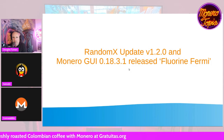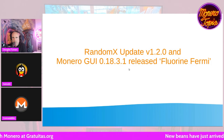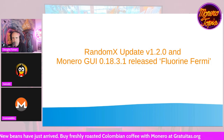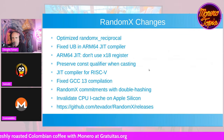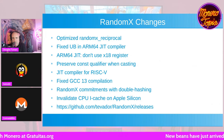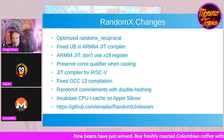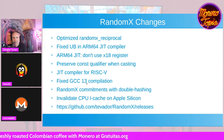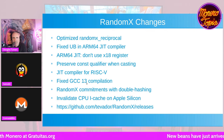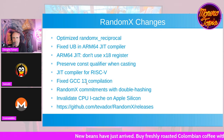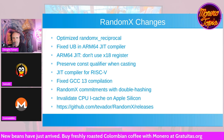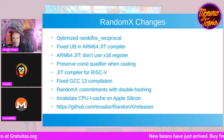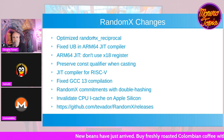So there's RandomX updates to v1.2. And the GUI, code name Fluorine for me, is version 0.18.3.1. The GCC13 compilation fix basically addresses some bugs Monero had during compilation for the GCC compiler. For the optimized RandomX reciprocal and the JIT compiler, it got updated from 64 bits to 32 bits — I don't know exactly why they did that.